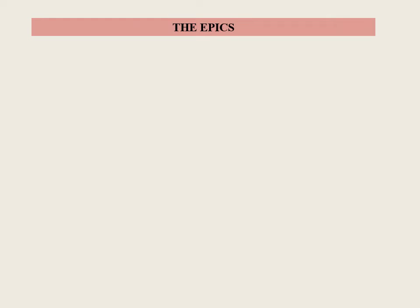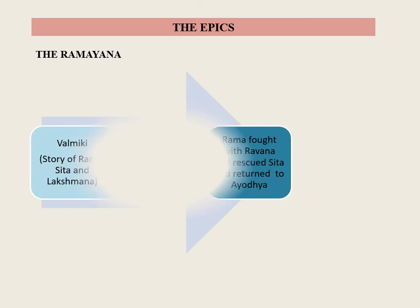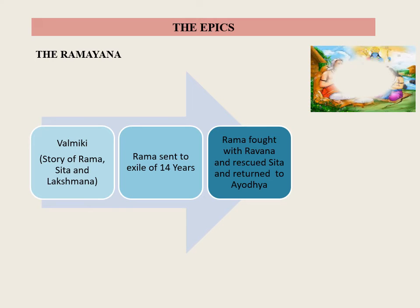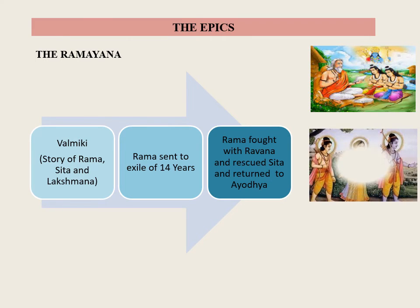The Epics: The most famous literary works of the later Vedic period were the two great epics — the Ramayana and the Mahabharata. The Ramayana is believed to be the work of sage Valmiki. The central theme is the story of Rama and Sita. Rama was the eldest son of King Dasharatha, who ruled over Kosala with Ayodhya as capital. The king wanted to appoint Rama as Yuvaraja, but was opposed by his second wife Queen Kaikeyi, who demanded the throne for her son Bharata and sent Rama into exile for 14 years.